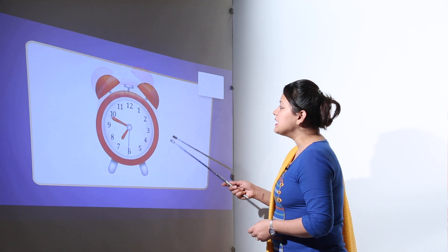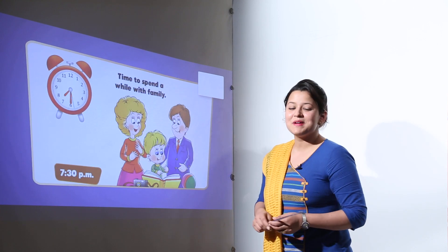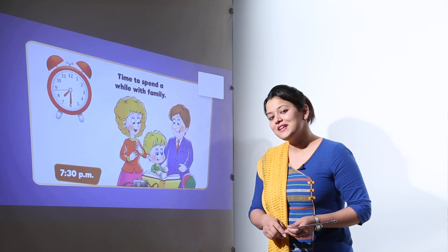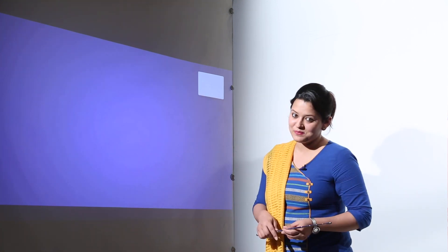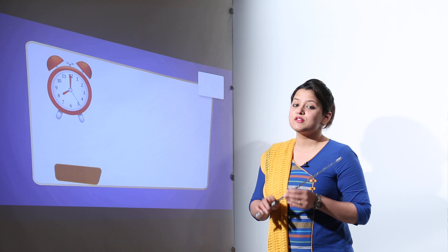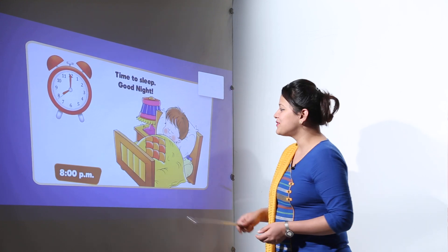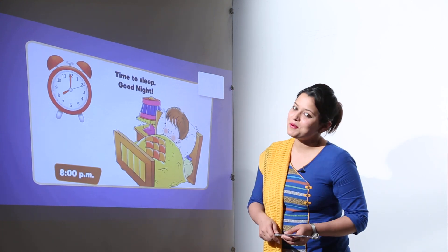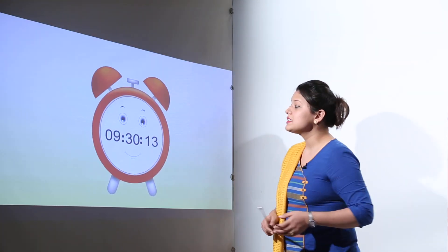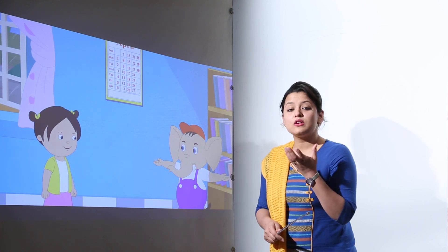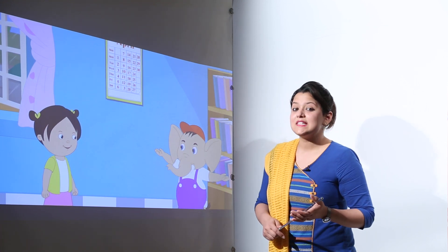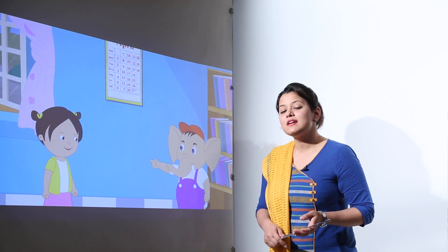At 7:30, it will be time for us to spend time with our family. Yes, we sit with our family and we spend some time with them. At 8:00, it's finally the time to get back to bed and say goodnight to everyone. So that was about the different times. That means in the clock, you can measure time in seconds, minutes and hours.